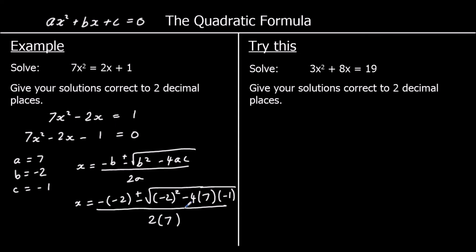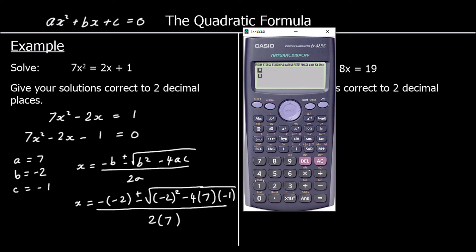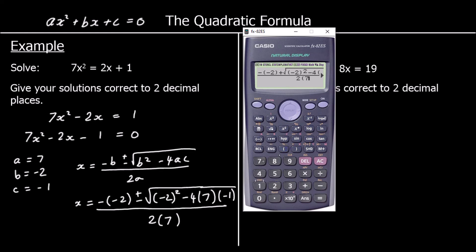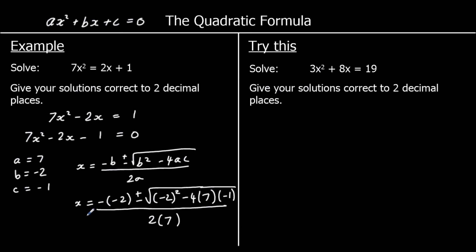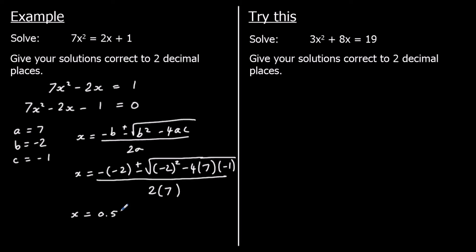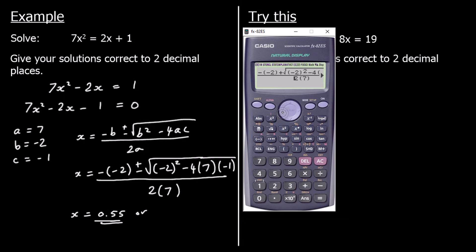We'll type it into the calculator once with the plus and once with the minus. So negative take away negative 2, plus the square root of negative 2 squared — making sure the negative 2 is in a bracket — minus 4 times 7 times negative 1, all over 2 times 7. Our first answer is 0.55 to 2 decimal places. And to get a second answer we change the plus into a minus, and we've got negative 0.26.